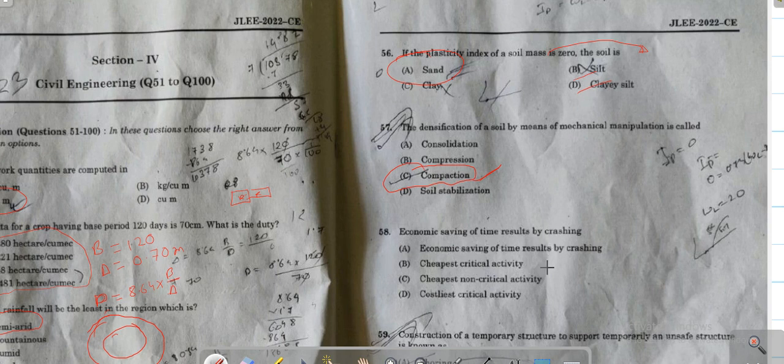Question 58: Economy of saving time results by crossing - the correct answer is critical activity. The economic path is the critical path which has the shortest duration or surface time.